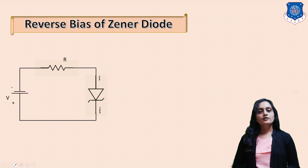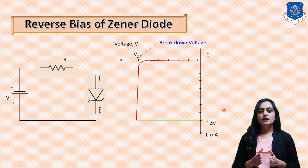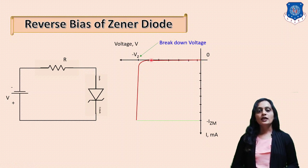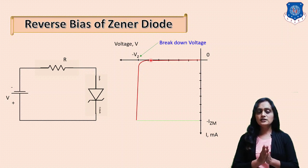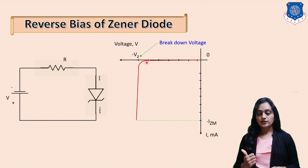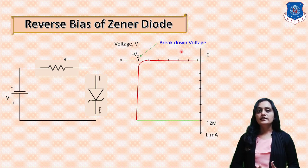Now we will plot the VI characteristic for the Zener diode. As we increase the supply voltage, initially a very small amount of current is flowing — of the order of nano amperes or less — and this is called the reverse saturation current, which is almost zero. After a certain voltage, you can see in the characteristic a sudden increase in the current. The voltage at which this high current flows through the Zener diode is called the Zener or breakdown voltage.